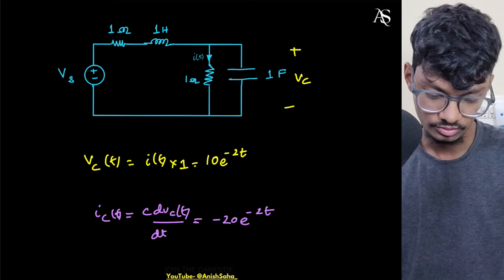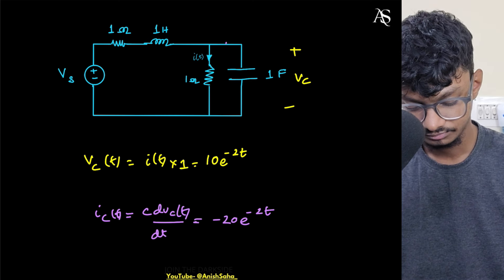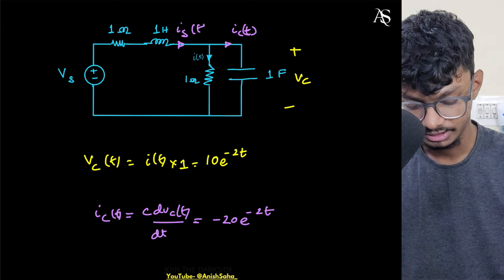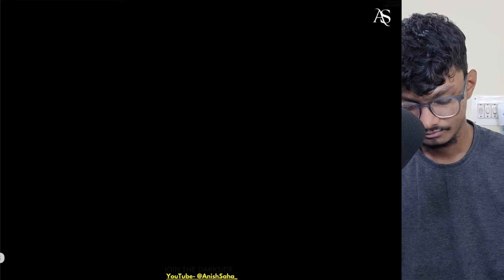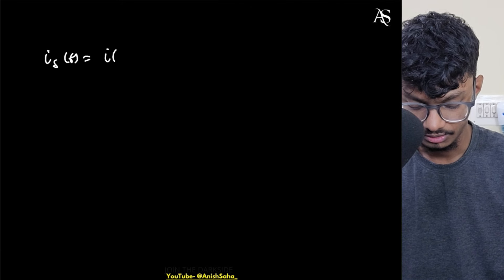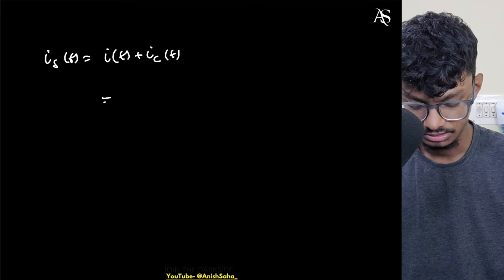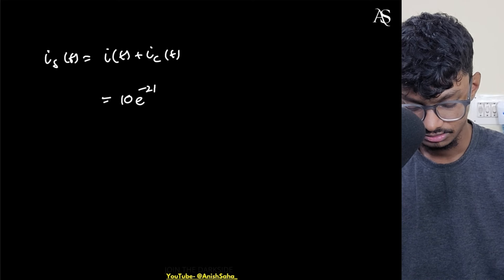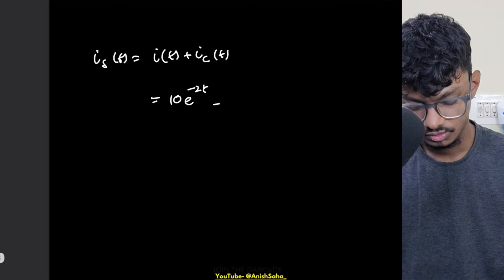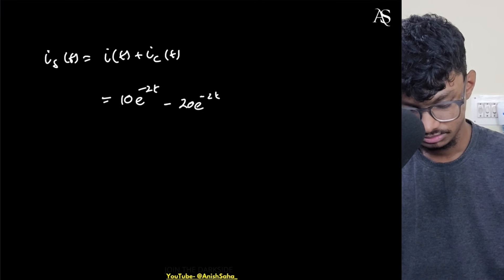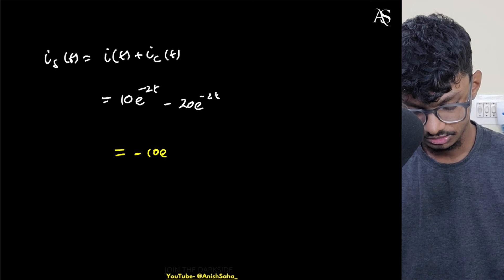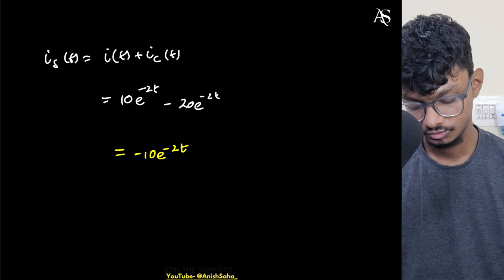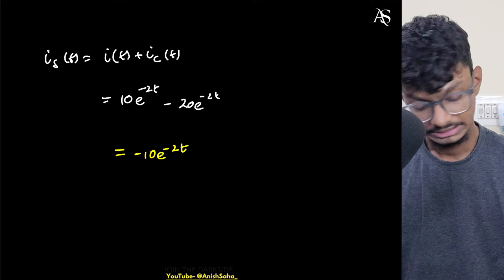So Ic(t) = -20e^(-2t). Now what is Is(t)? Is(t) = i(t) + Ic(t). i(t) is given as 10e^(-2t), and Ic(t) is -20e^(-2t), so Is(t) = 10e^(-2t) + (-20e^(-2t)) = -10e^(-2t).